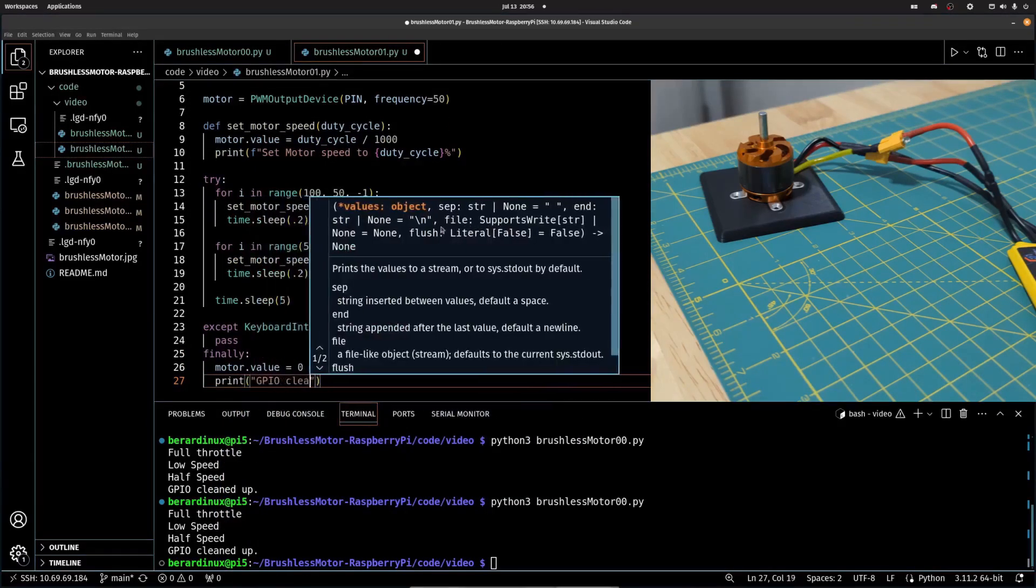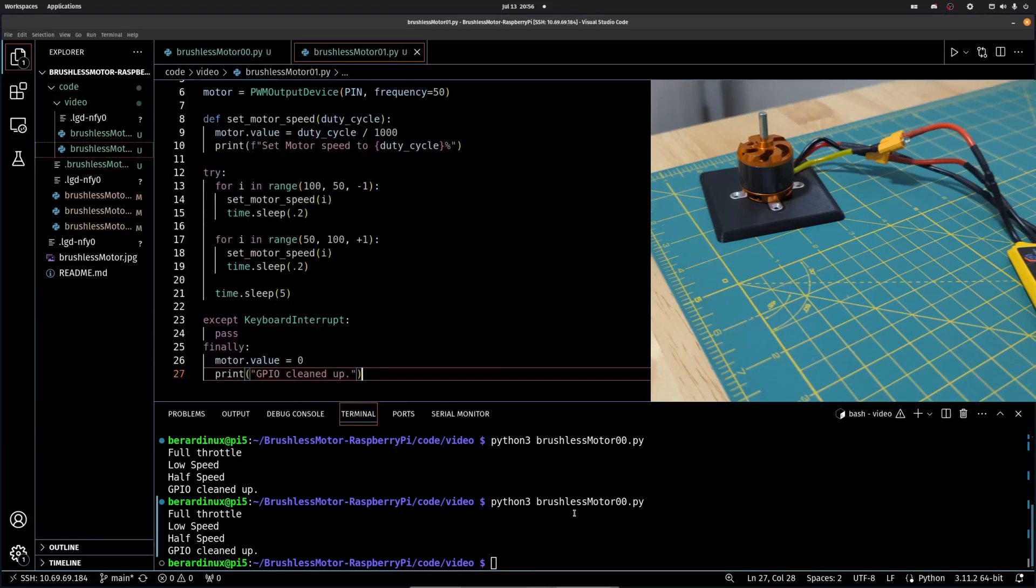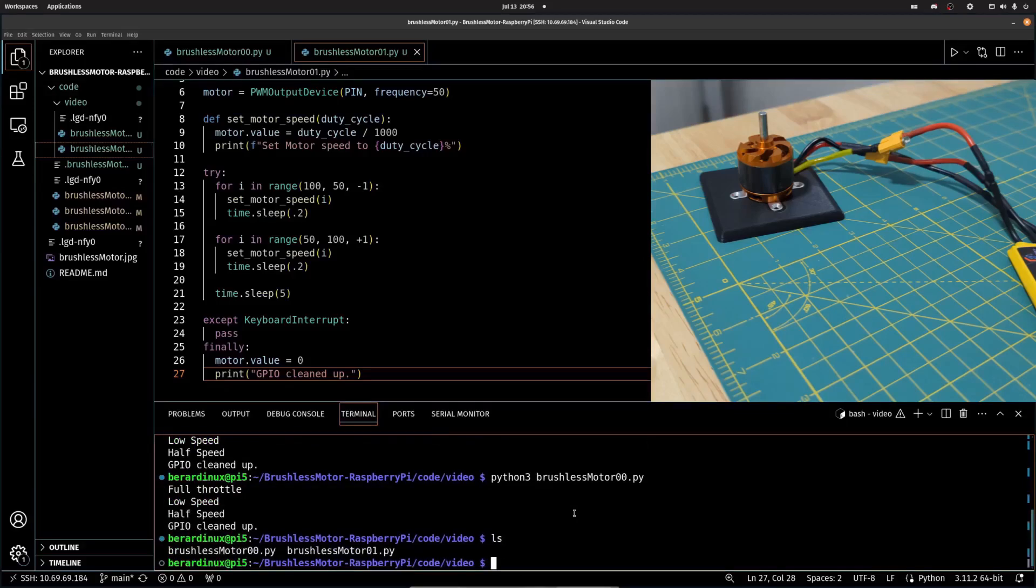And then I made another for loop so we can step that up and do the opposite, go from 50 back up to 100. That way we can vary the speed through the script. And you can also see that we're using a try statement here.